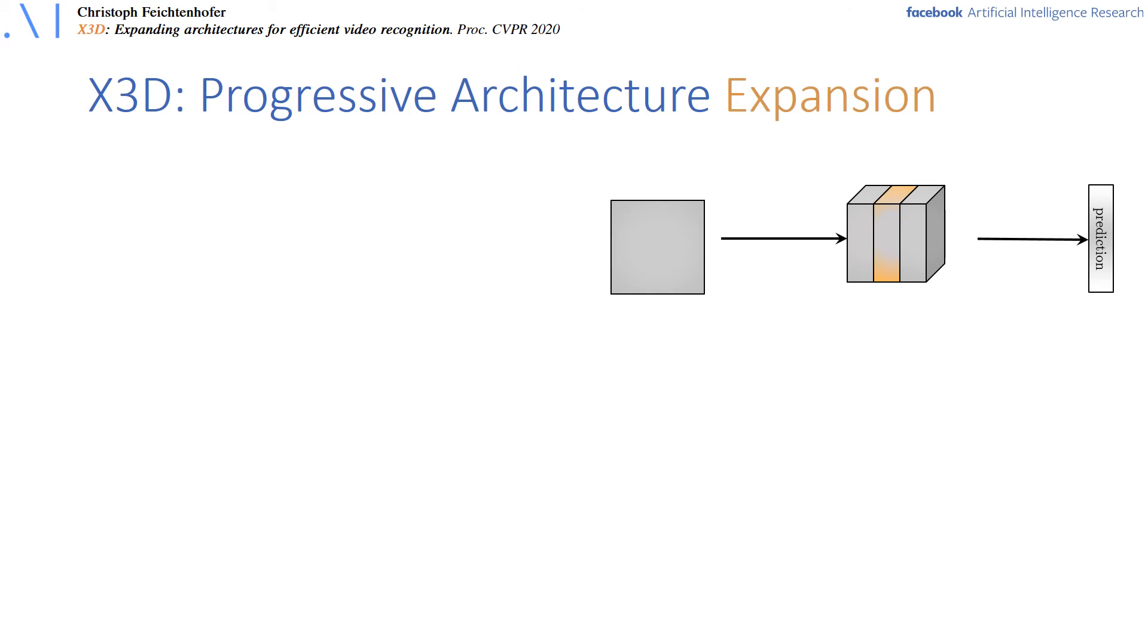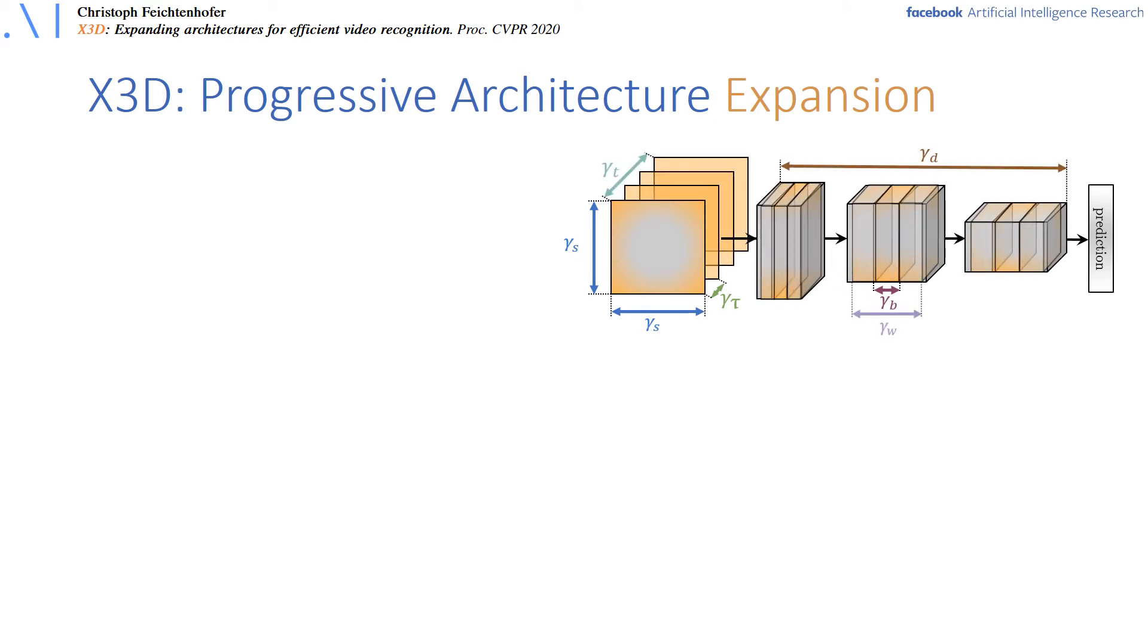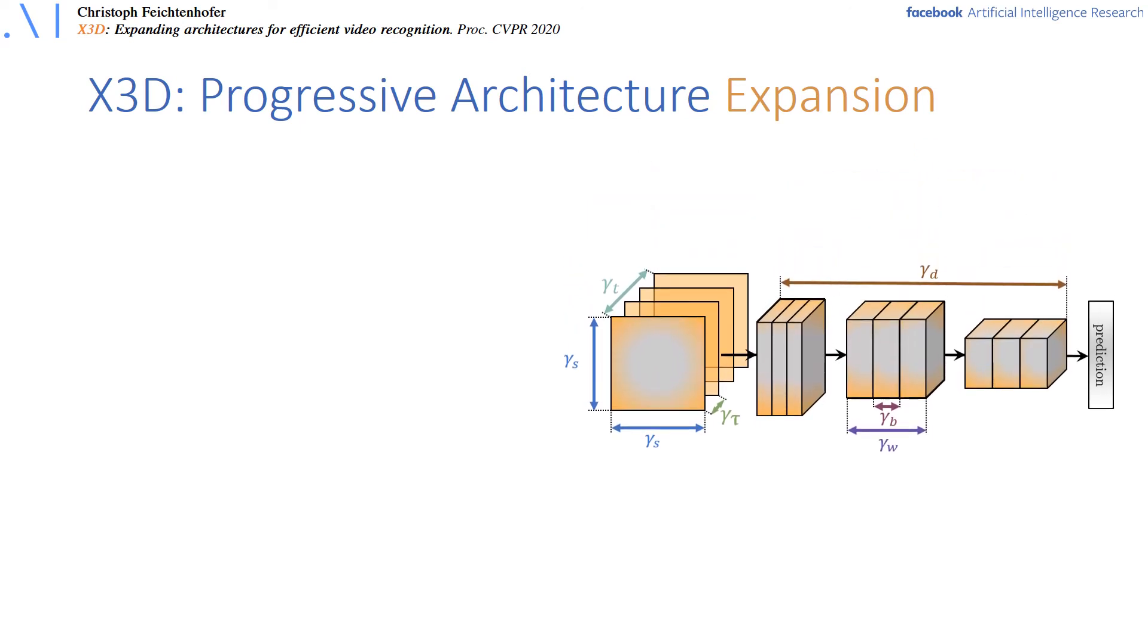We start with X2D, a tiny image-based model, and expand it. Our progressive expansion starts by expanding first the bottleneck width of the model, then the frame rate, the spatial resolution, duration, depth of the network, and finally also the global width of the layers.